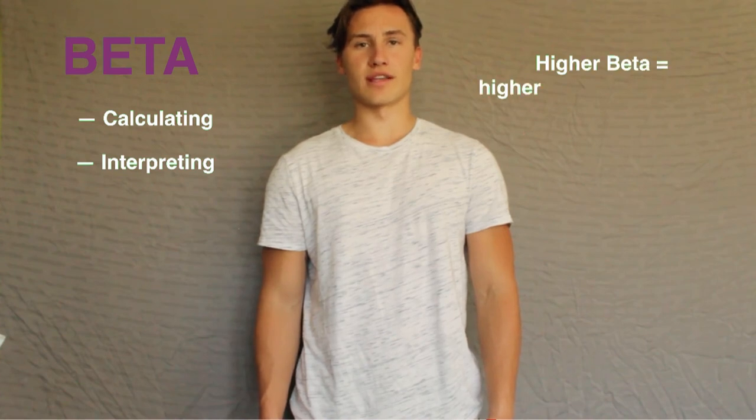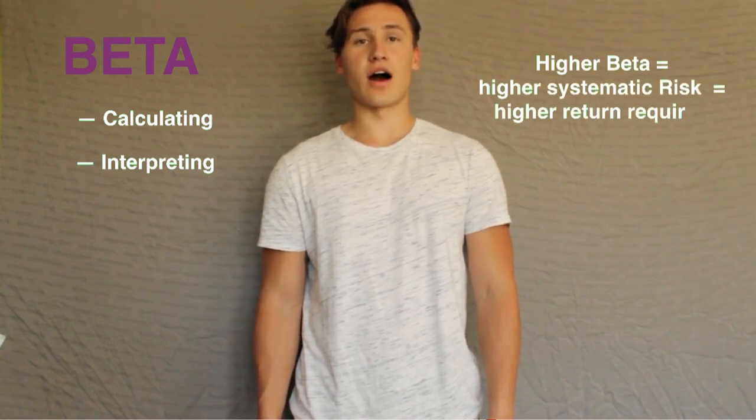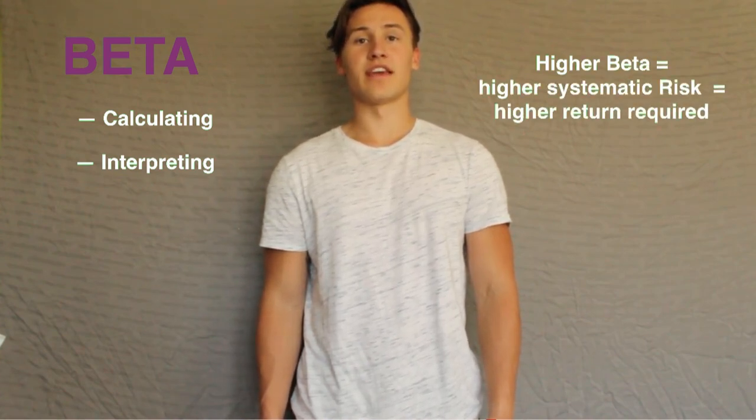Today we learned that a company's systematic risk relative to the market can be expressed as beta. Then, we learned how to calculate and interpret a company's beta. Remember that a higher beta means more risk, which means investors will require a higher return on their investment. Thank you for watching.